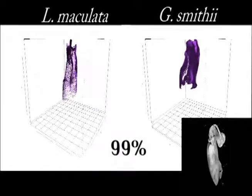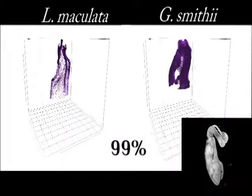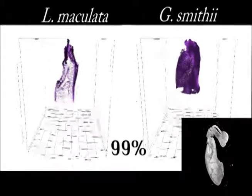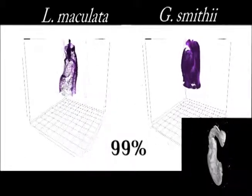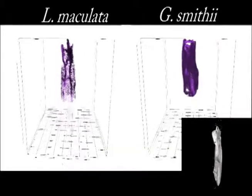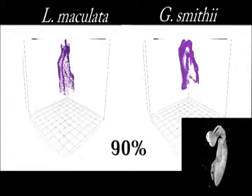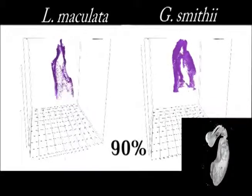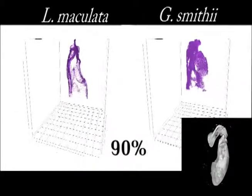This last view compares the CT scan with strain energy localization of the prey-smashing shrimp from the previous animations, G. Smithii, and another mantis shrimp species, L. Maculata, which typically spears, rather than punches its prey.